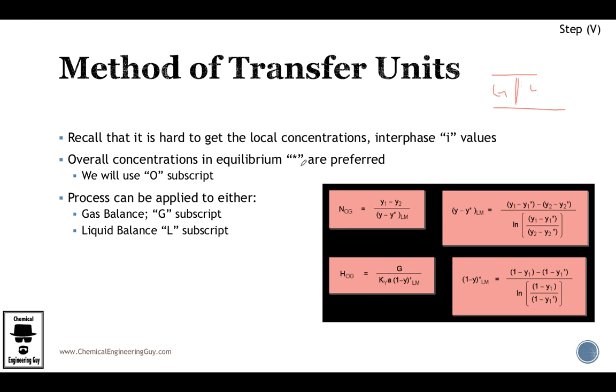So what we do is, remember from previous sections, we can get the overall mass transfer coefficients and the overall concentration based on equilibrium. Remember the asterisk value, and as you can see here, that's what we're doing.